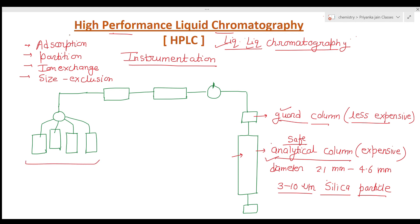Now, this is the solvent reservoir — a specific feature of HPLC instrumentation. We use several solvent reservoirs to allow changing the mobile phase composition, especially when using gradient elution. Before use, the solvents must be treated to remove dissolved gases such as O2, which can produce bubbles and interfere with the separation.